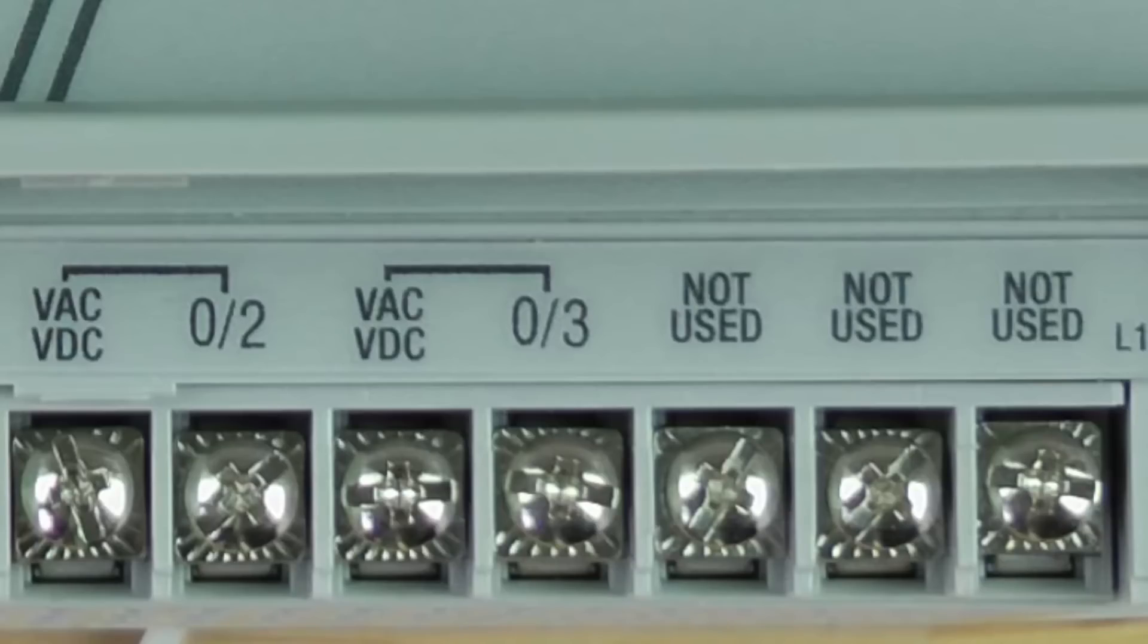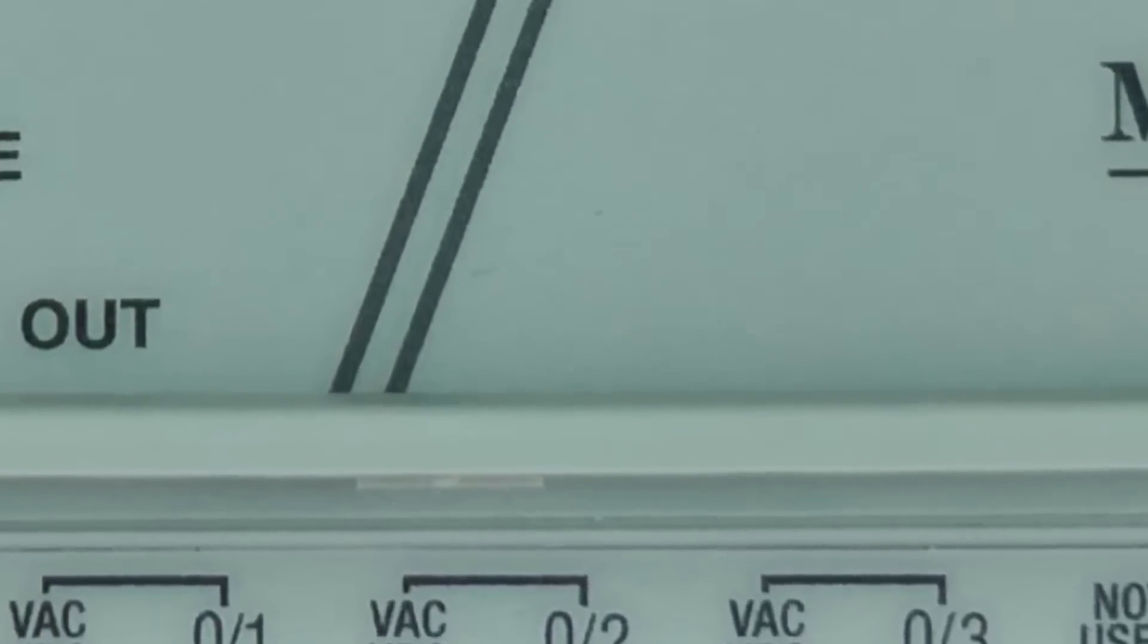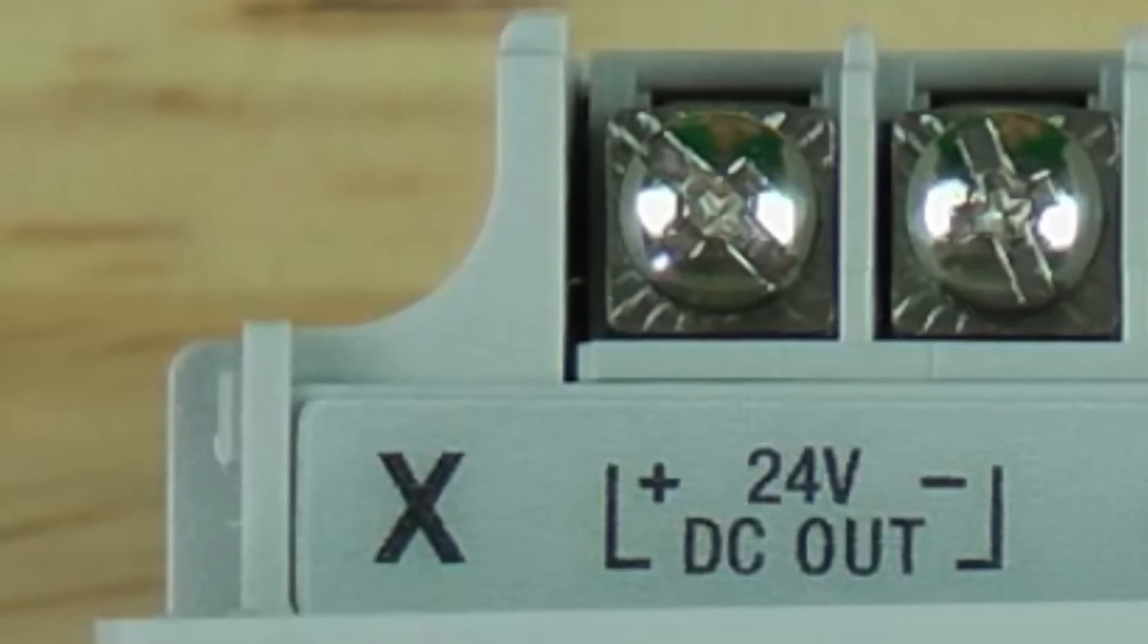Now let's move to the top terminals and start on the very left hand side. Here we'll see the MicroLogix actually provides us with 24 volt DC power. This power source is often referred to as sensor power.